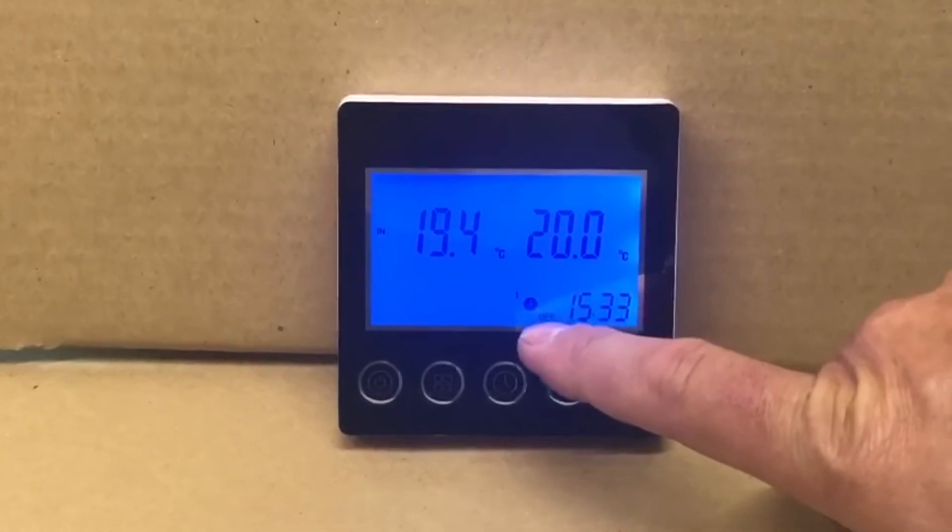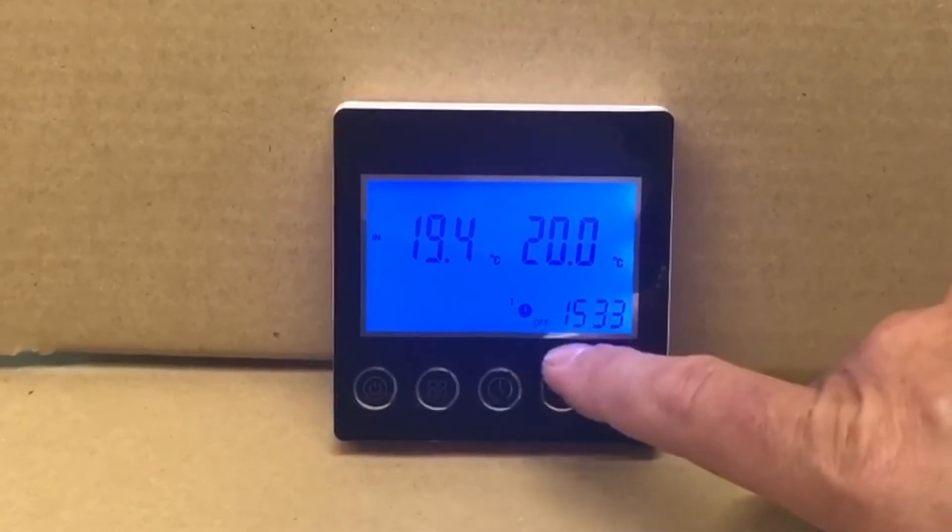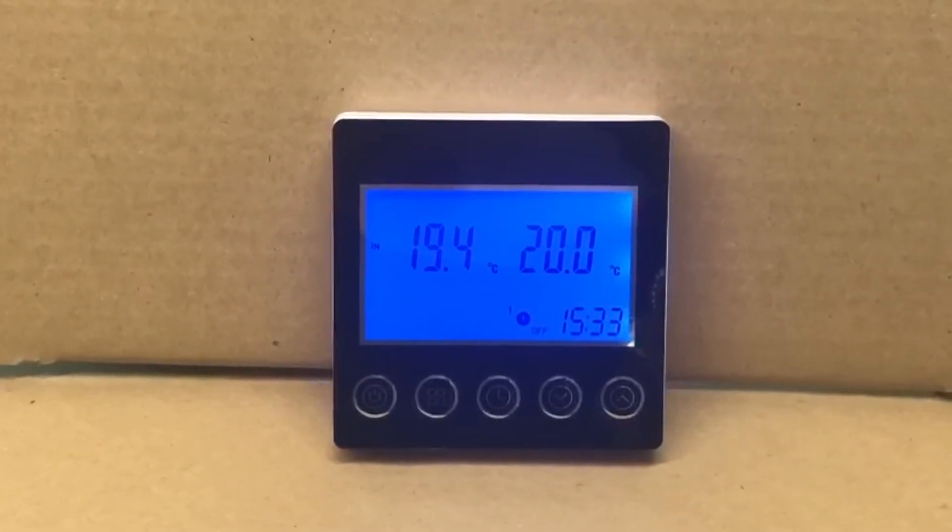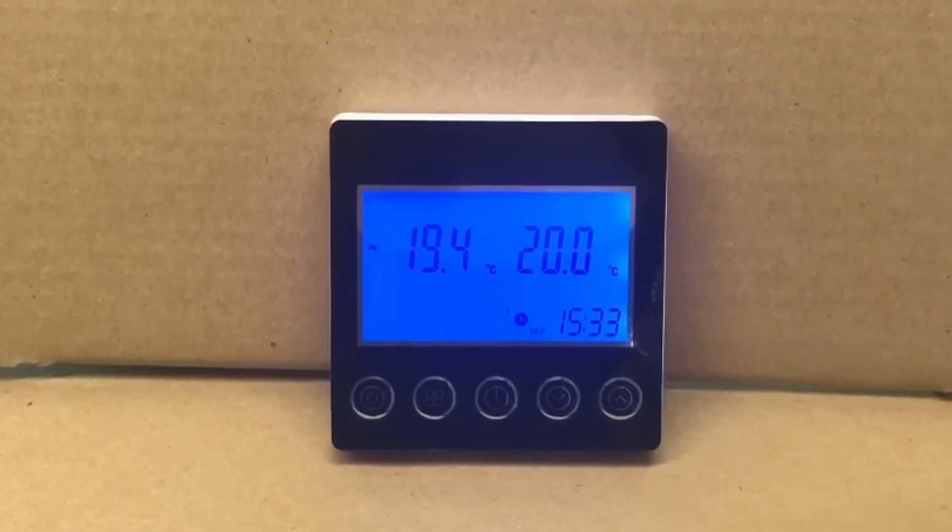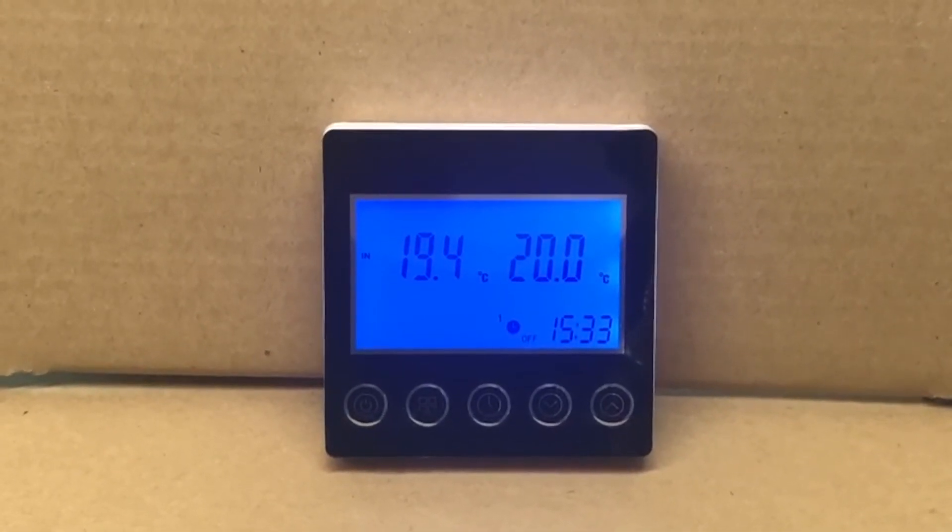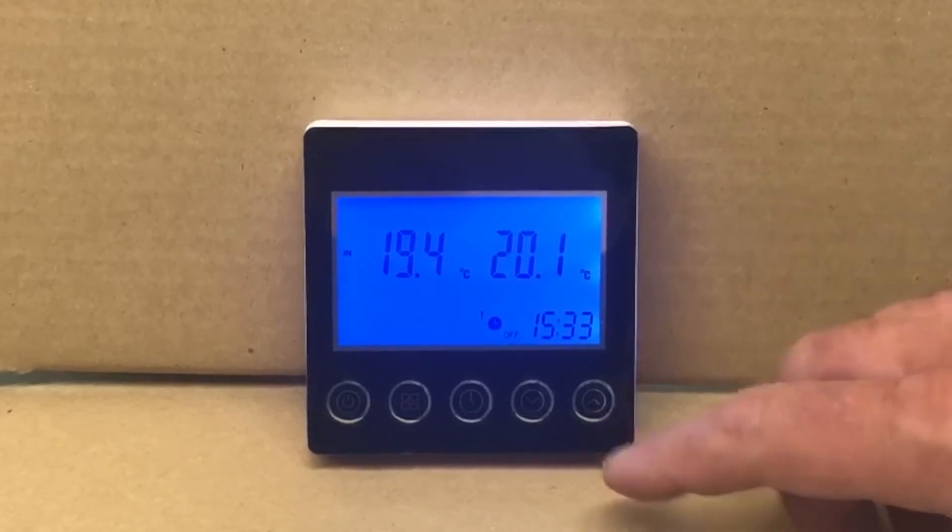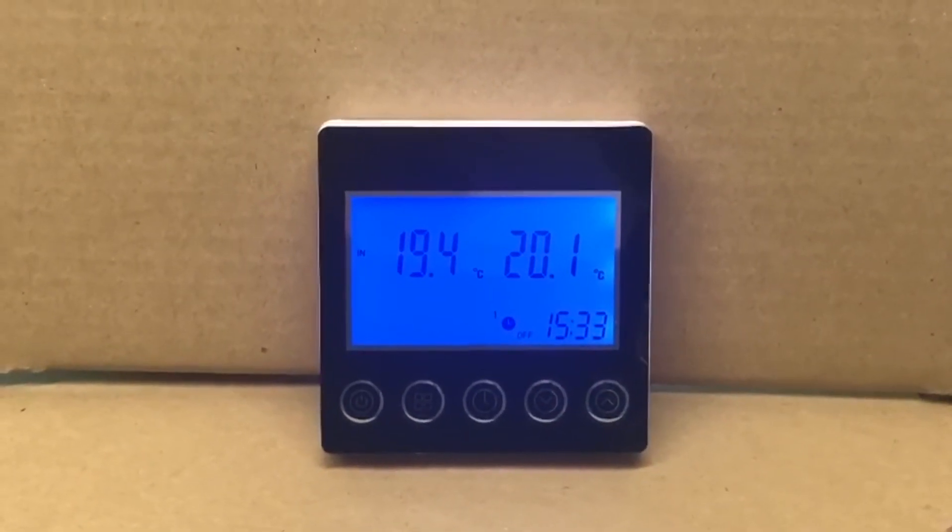Now we can see that the timer is set. It's currently off because it's outside of the schedule, and there is only one timer set. If I'd have set the others, we'd have seen one, two, and three, and it would tell you which timer cycle is active.